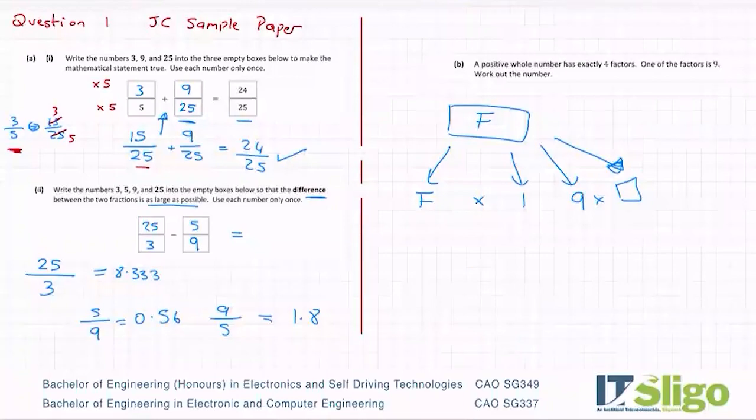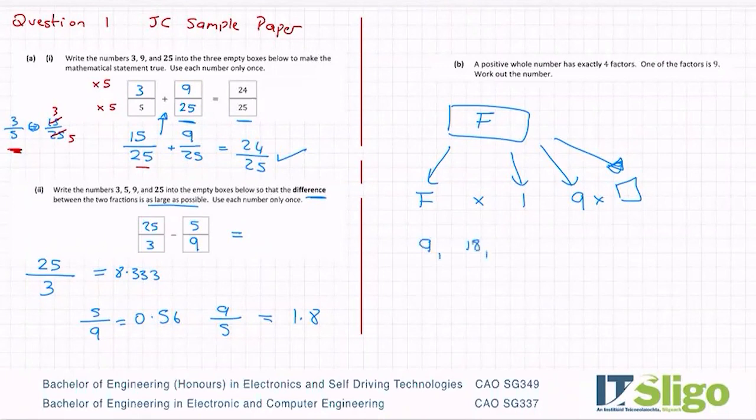So how would I do this? Well, if one of the factors is nine, then nine is a multiple. So let's write out the multiples of nine. Nine, 18, 27, 36, 45, 54, 63. And let's see. And of course, there's loads more. Let's look at the factors of these.